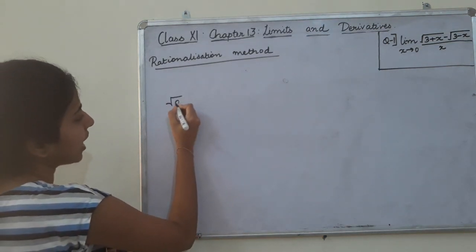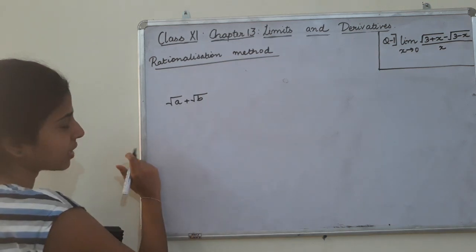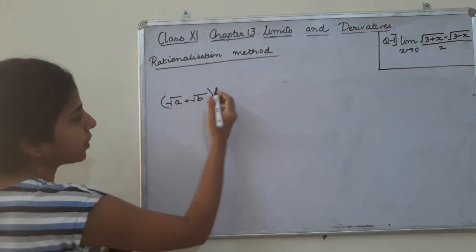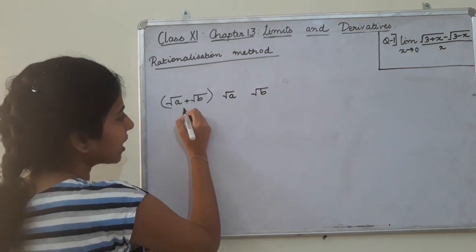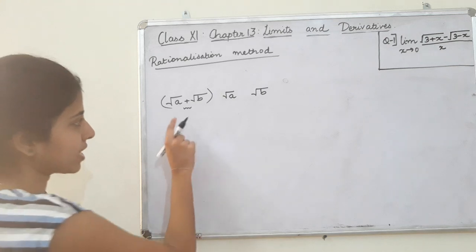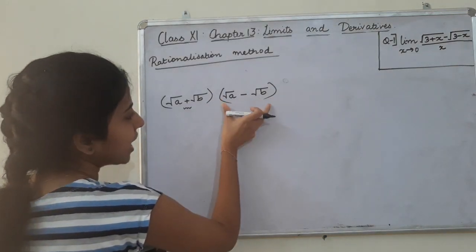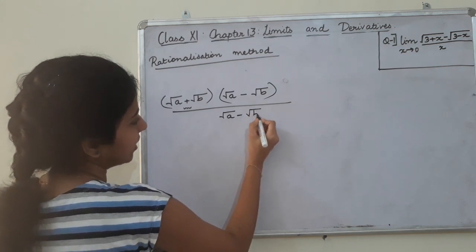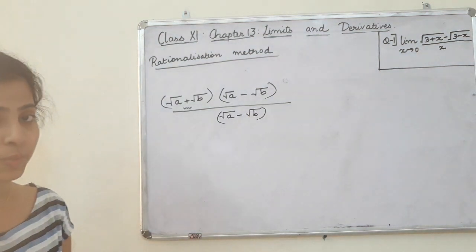Here we have root A plus root B. So, if we have rationalization of the function, root B with a plus sign — we change it to a minus sign. That is the rationalization method.